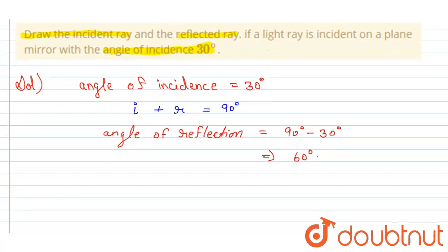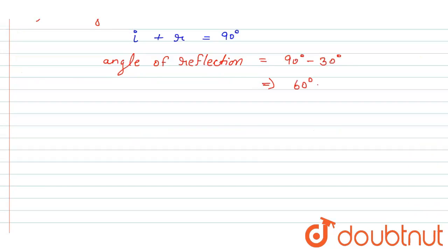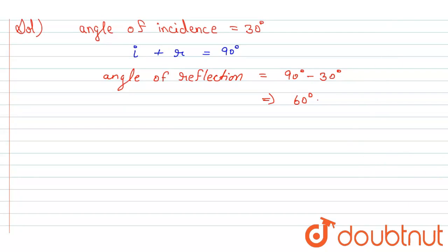So now we have to draw the ray diagram. The ray diagram first having a plane mirror and normal point.